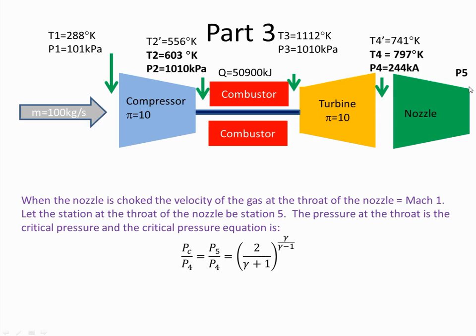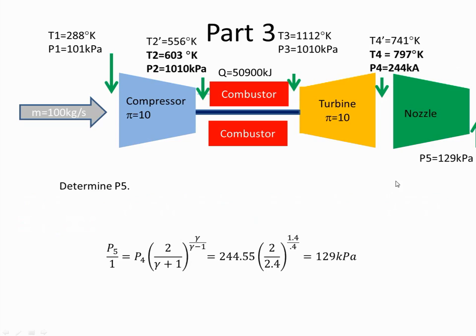So we now want to calculate the pressure here at P5. To do that then we need to see is the nozzle choked. When the nozzle is choked the Mach number is equal to 1. So I'm going to calculate the critical pressure at Mach1, the pressure here is the critical pressure. And if the critical pressure is less than atmospheric, which is 101, then it is not choked. If it's more than 101, then it is choked. So I plug the values in and I've worked out that the pressure here is 129 kilopascals. That's the critical pressure. This is greater than 101 kilopascals. Therefore the nozzle is choked.